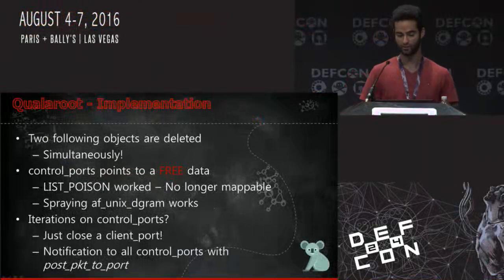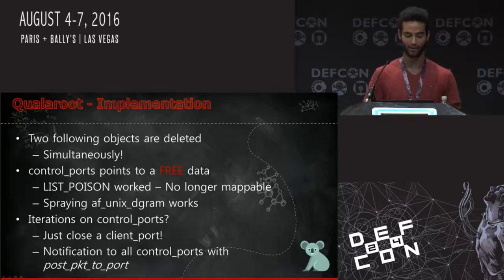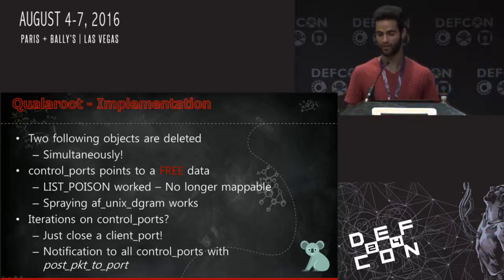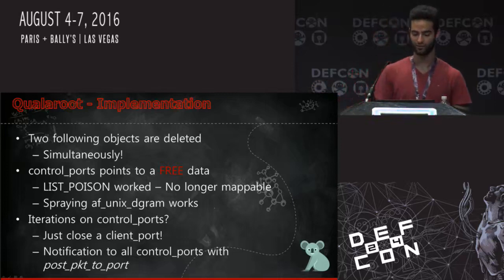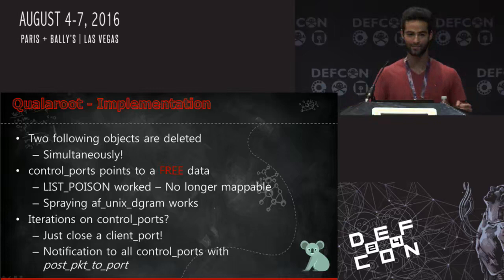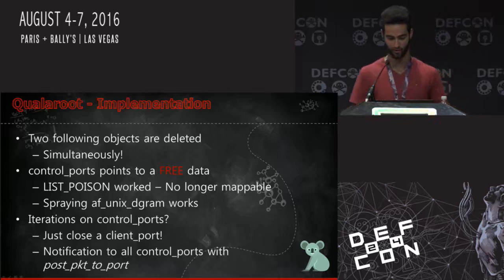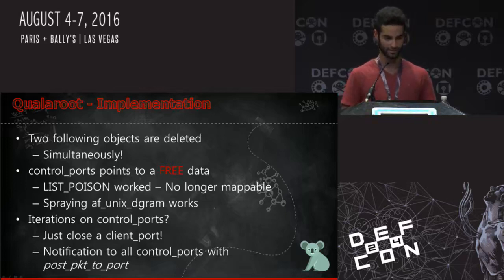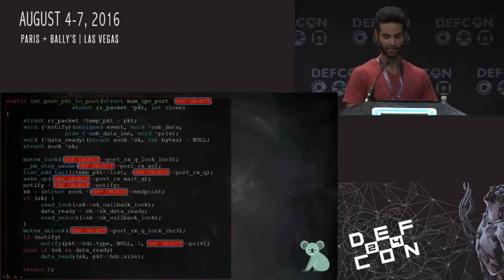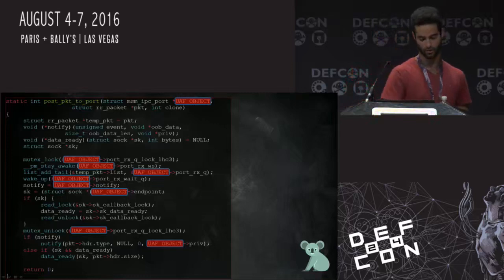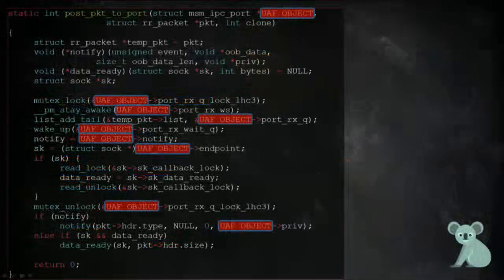We used Unix datagrams to spray that. Since this is the list of the control ports, once we fake an object there, we want the list to be used. So we just create or destroy any endpoint in this address family, and each time we do that, all the objects on this list must be notified. The notifying function is post_packet_to_port. Each object in the control ports list is transferred to the post_packet_to_port function. As you can see, we have a lot of new primitives — from information disclosure to function calls, memory corruption, and many other primitives.